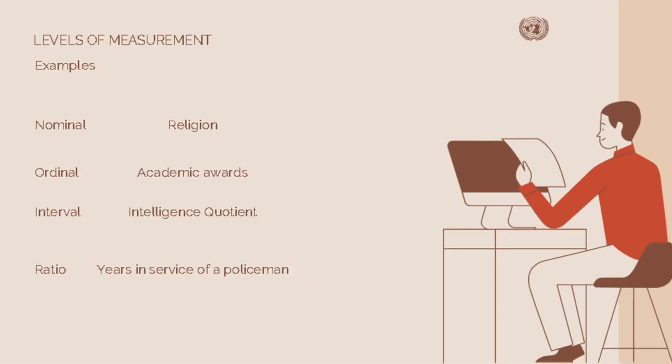For examples of levels of measurement: religion is nominal, academic awards is ordinal, and intelligence quotient is interval.